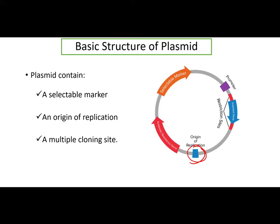This plasmid is used as a vector. A vector is another term for a carrier — it carries your genes of interest. This vector plays a role as a carrier. Whatever genes you have selected that you want to introduce into bacteria, those genes can be inserted into this plasmid using the multiple cloning site. You can introduce your gene of interest into the plasmid region other than the selectable marker and origin of replication.